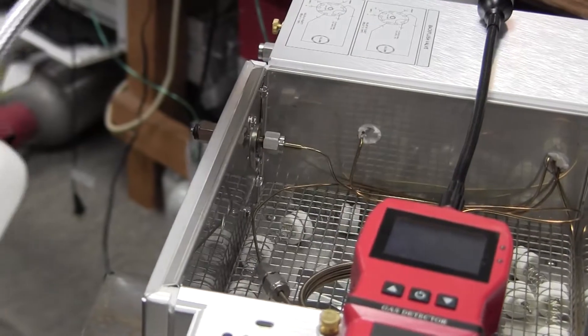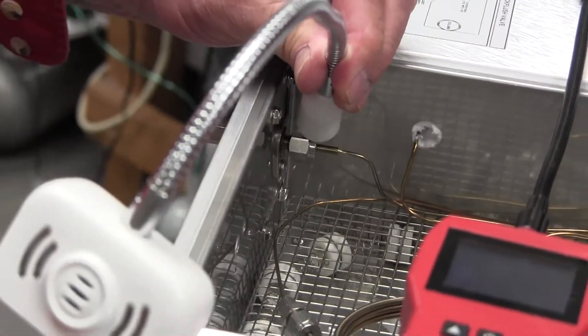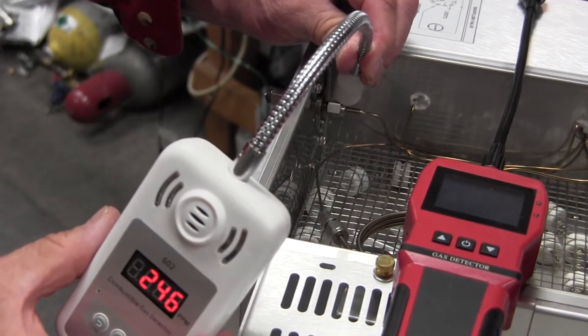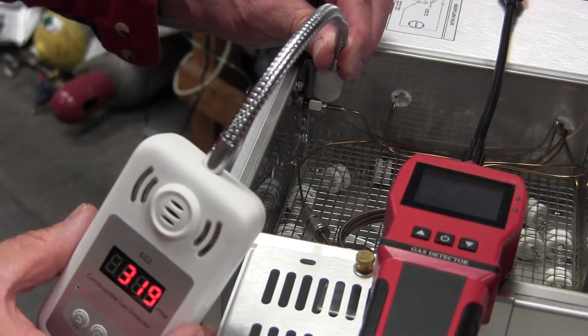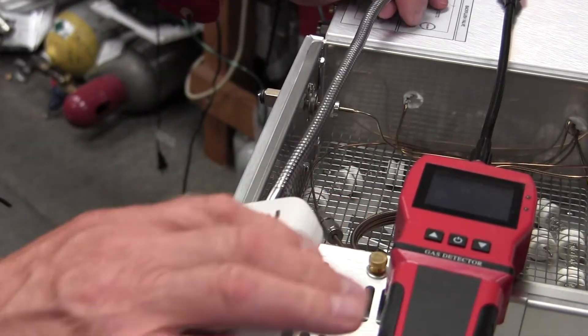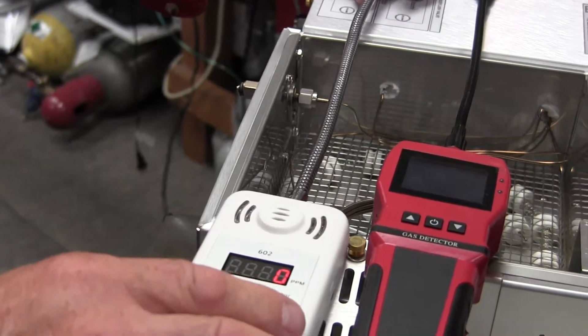That's the more expensive one, and then here's the less expensive one. You can see it still works, but for very small leaks, the more expensive one is more sensitive, so it's easier to find small leaks.